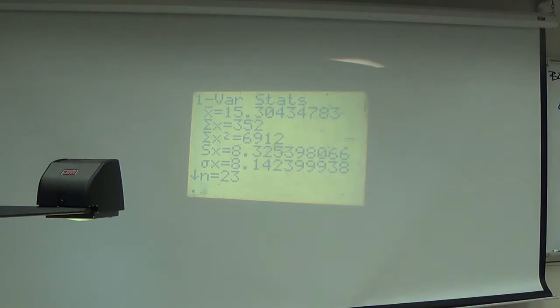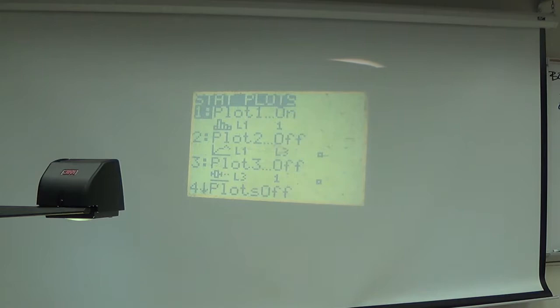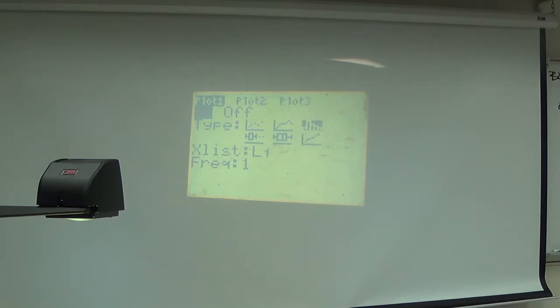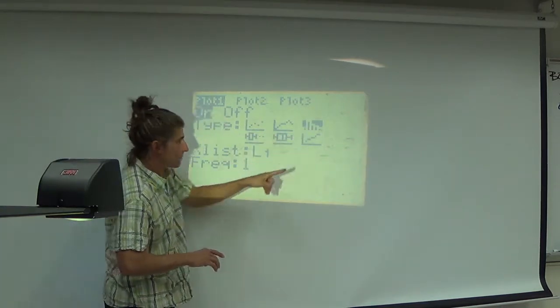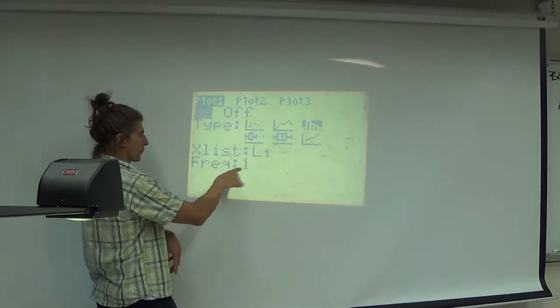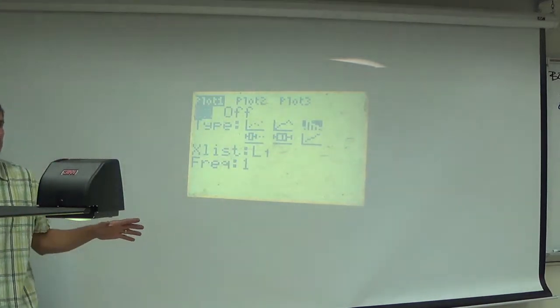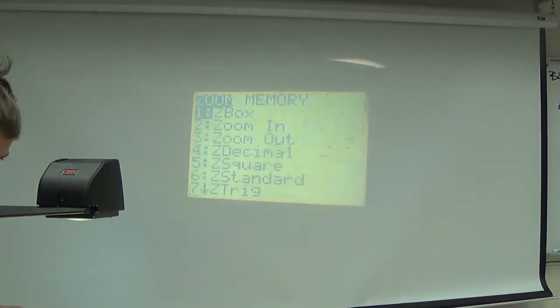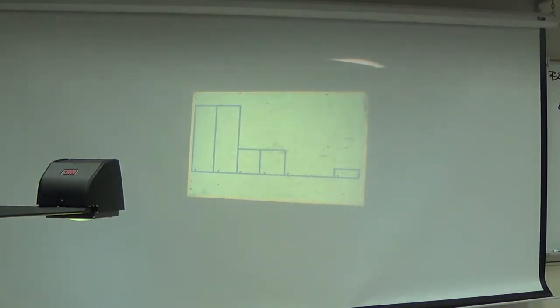First thing I want you to do is turn your histogram on. This is what I set mine up looking like. Plot one, on. Type: histogram. Data: L1. Frequency: one. Zoom nine nine. And then I began to finagle.